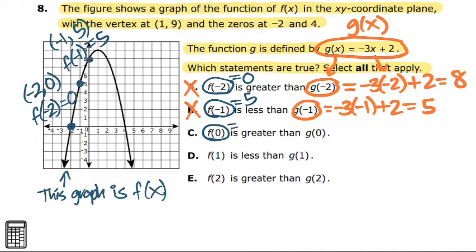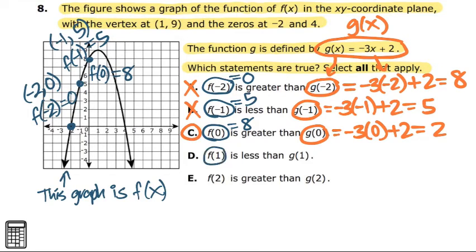Now for c. c is f of 0. Remember to look at the parabola first. That is actually the y-intercept. It's the number 8. And we're going to see, is it greater than g of 0? g of 0, when you plug in a 0, is just your b, which is the number 2. That is your y-intercept. So that 8 is greater than 2, and that's why I circled it.